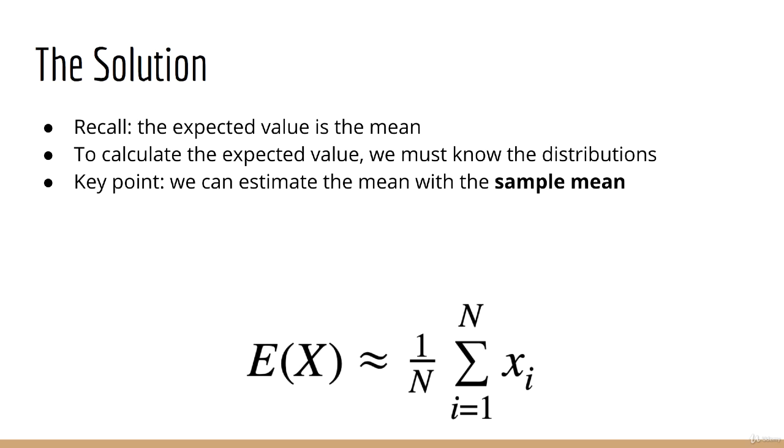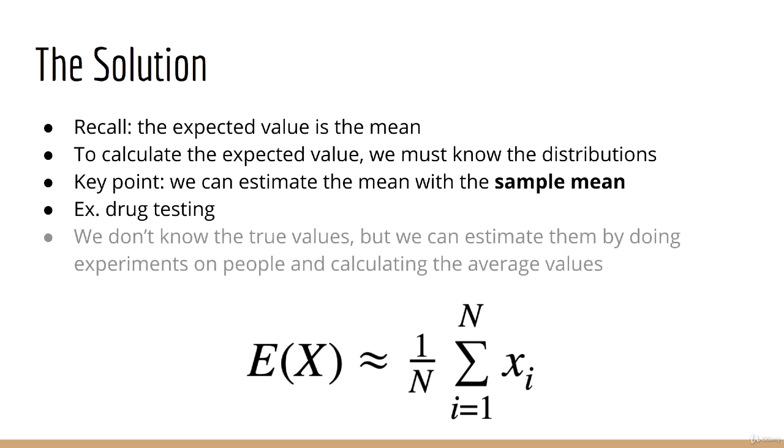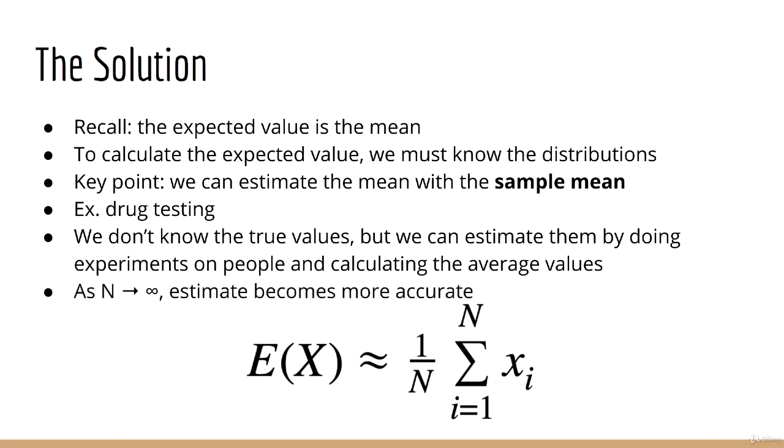This is the basis for many scientific experiments. For example, if we want to test a drug, we don't know the true values, but we can do an experiment on a set number of people and calculate the average values. The sample mean is simply the sum of all the samples we collect, divided by the number of samples. The idea is that, as n approaches infinity, this estimate will become more and more accurate.